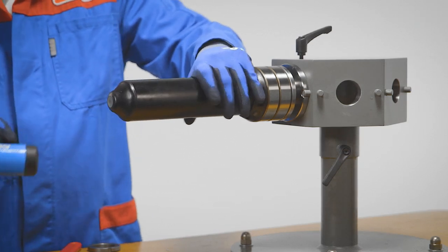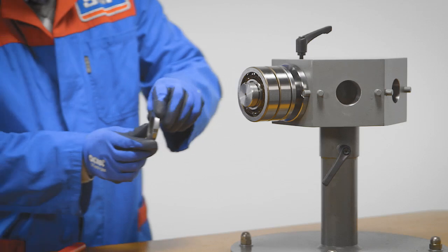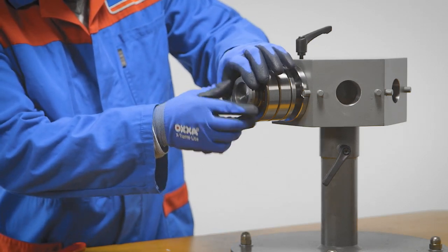When both bearings have been mounted in the correct configuration, they are secured on the shaft by the lock nut.